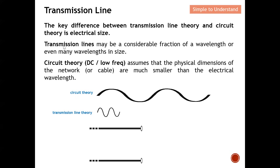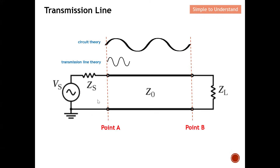Let me use another slide to further explain this concept. In this diagram, we have the source and the load, with the transmission line in between. If I apply a signal at point A, what will the signal be at point B? Under circuit theory, the voltage at point A will be the same at point B according to Ohm's Law, because the cable is a perfect short circuit. However, things change under transmission line theory.